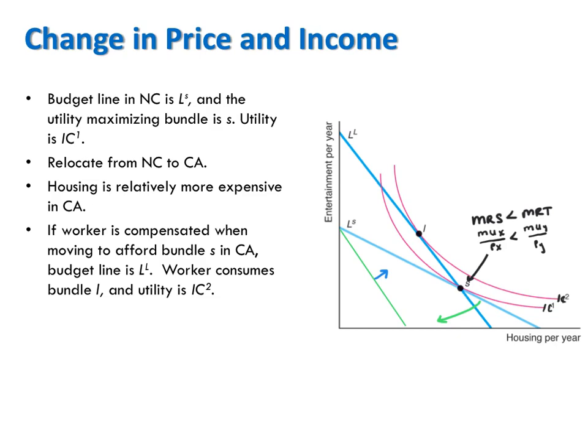Another way to think of it is that the loss in purchasing power the consumer experiences due to the higher price of housing is exactly offset by the increase in purchasing power caused by the higher income. So in moving from S to I, the consumer is really responding to a change in the relative price of housing holding purchasing power constant. This sounds a lot like a substitution effect, but the substitution effect technically involves responding to the change in the relative price of housing holding not purchasing power constant, but instead utility. Let's look at that next.